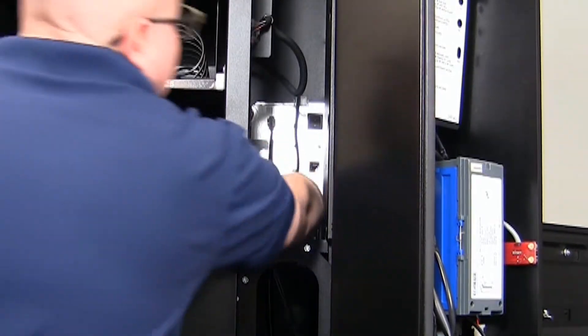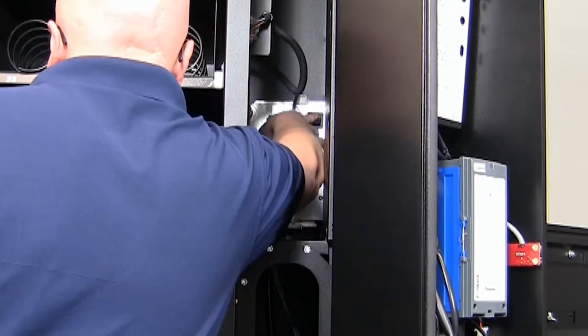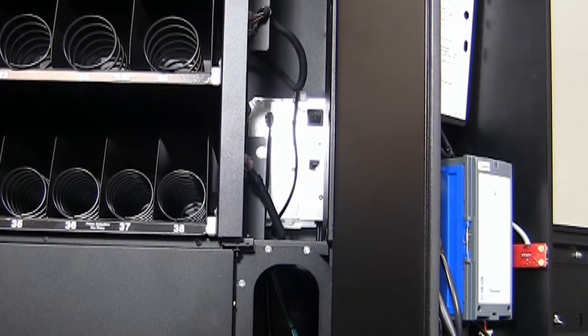Locate tray 3 approximately chest level and identify the cavity to the back of the machine. Flip the power switch to the on position.